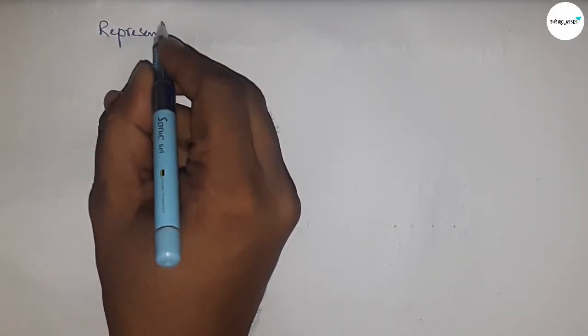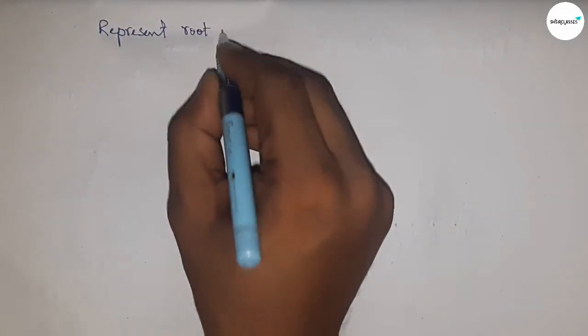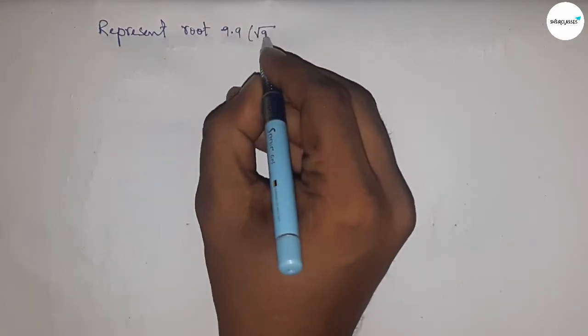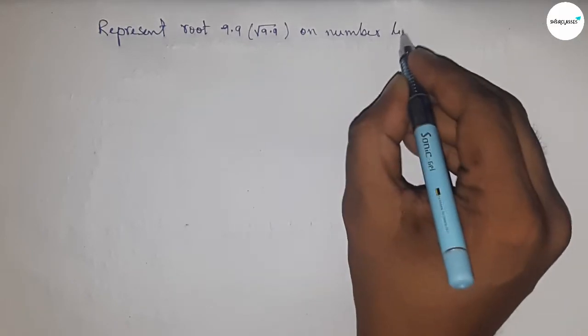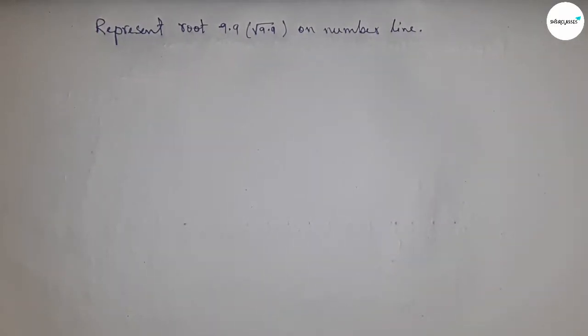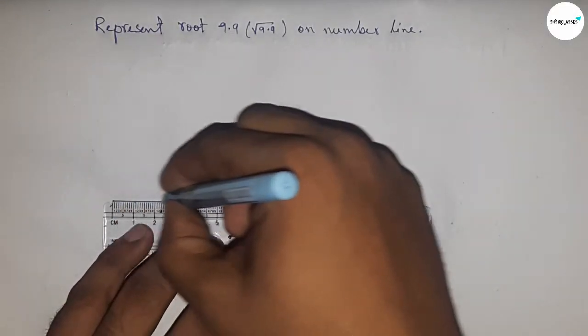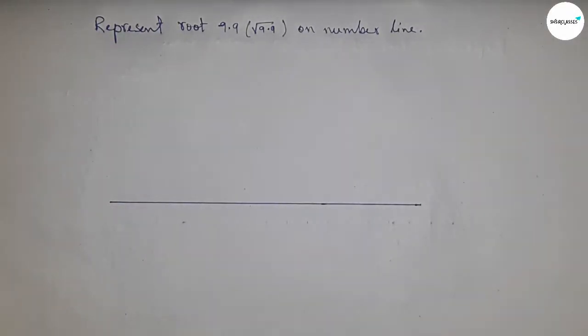Hi everyone, welcome to SSR classes. Today we're talking about how to represent root 9.9 on number line. Let's start. First of all, draw a line of any length, and this is the AX line.